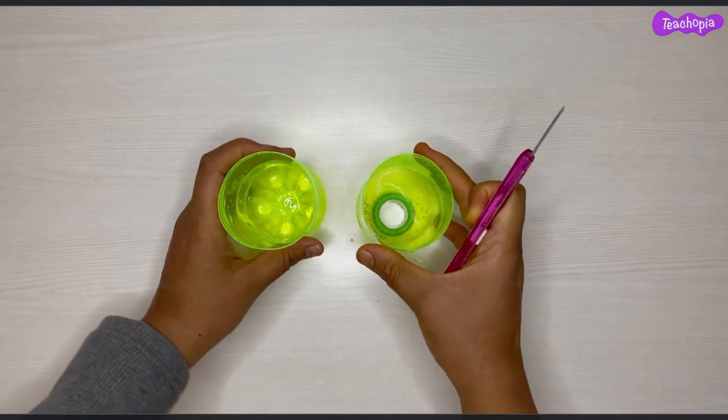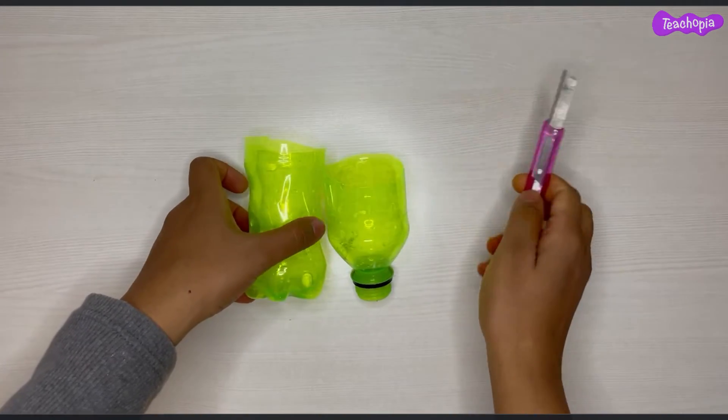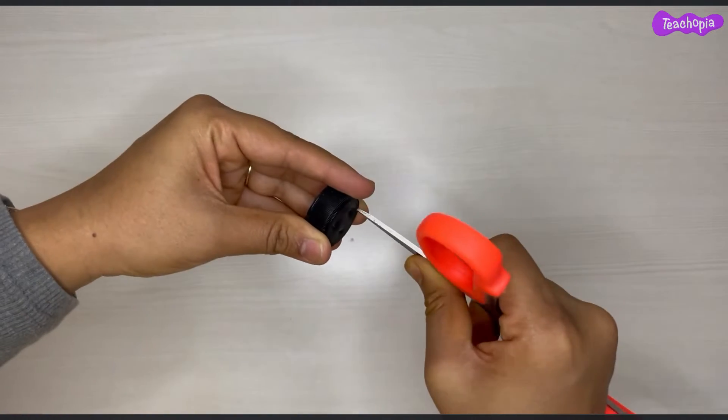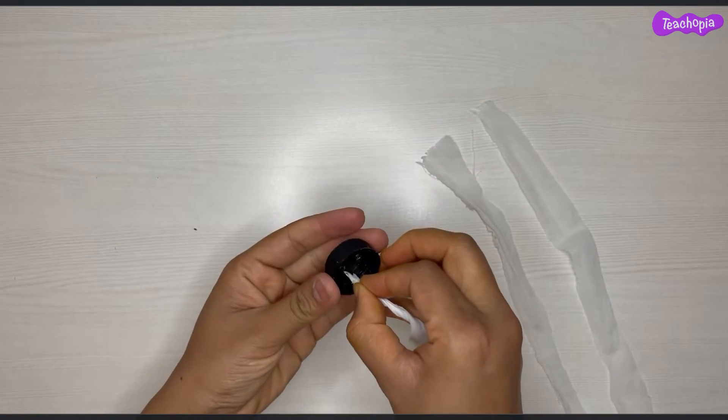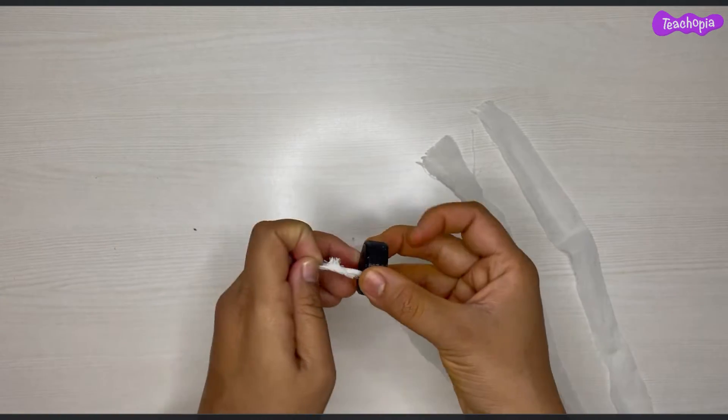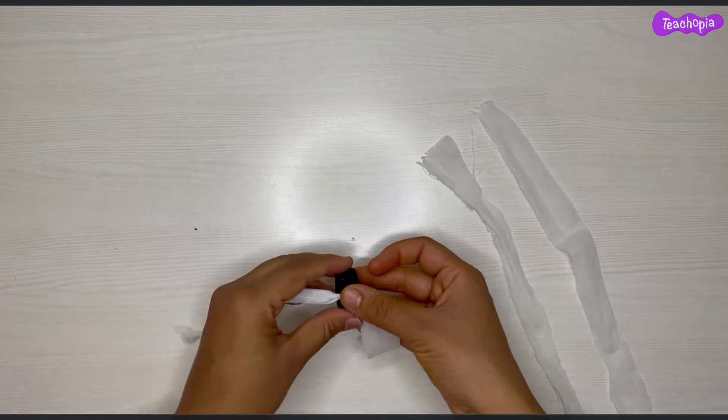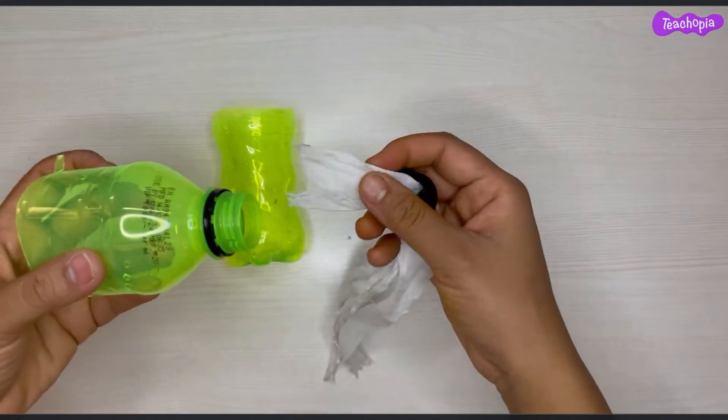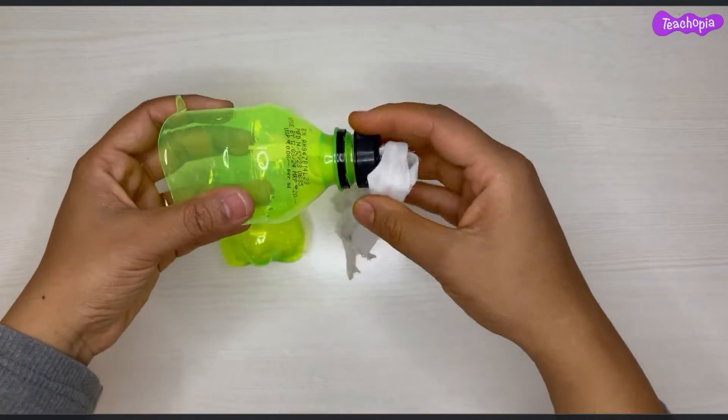Now, make three holes in the cap using scissors. Make sure that the holes are slightly bigger in size. Insert the cloth strips one by one through these holes. After the strips have been inserted, close the cap of the bottle.